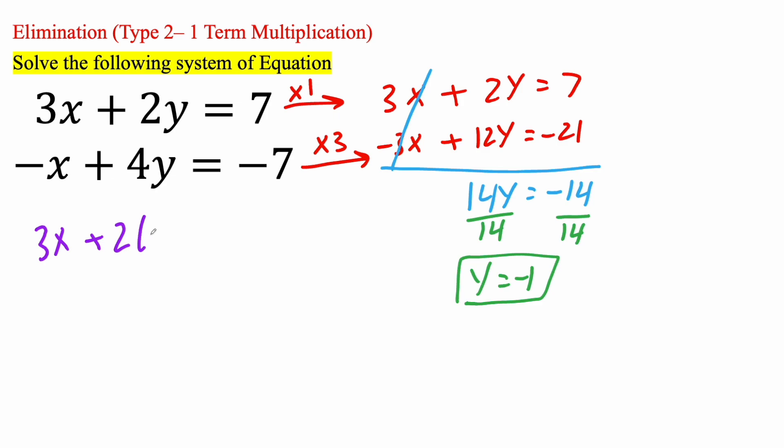So now we're going to expand. So 3x, 2 times negative 1 is going to give us negative 2 is equal to 7. So we need to get the opposite of negative 2. So we'll add 2 on both sides, add 2 on both sides.